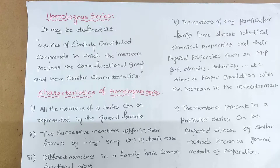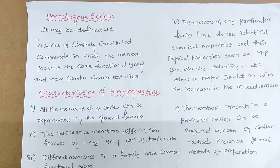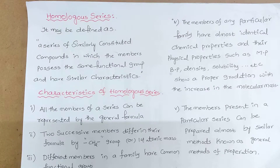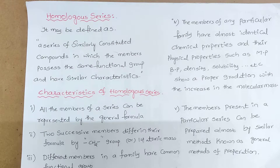So these are the five important characteristics of the homologous series: one, all members have the same general formula; two, two successive members are separated by CH2 or 14 atomic mass units; three, all have the same functional group; four, all have identical chemical properties; five, physical properties show a proper increase with increase in molecular mass; and all members can be prepared by the same general method of preparation.